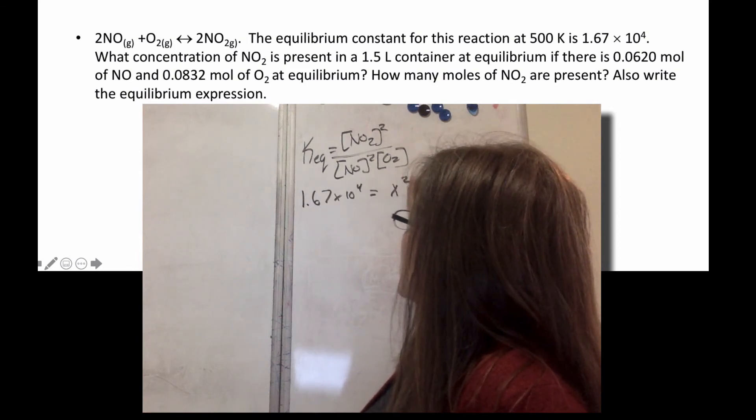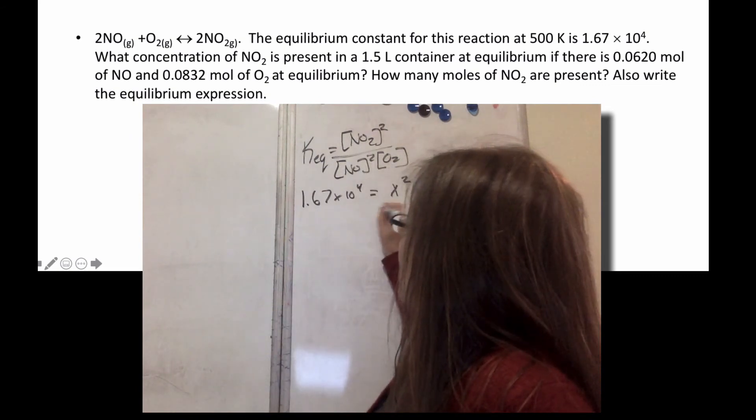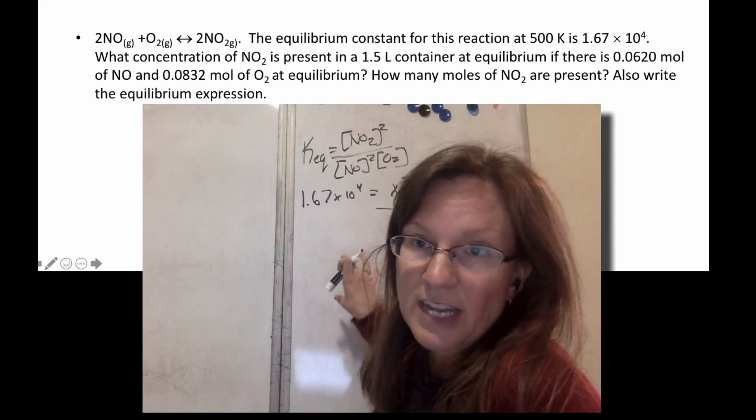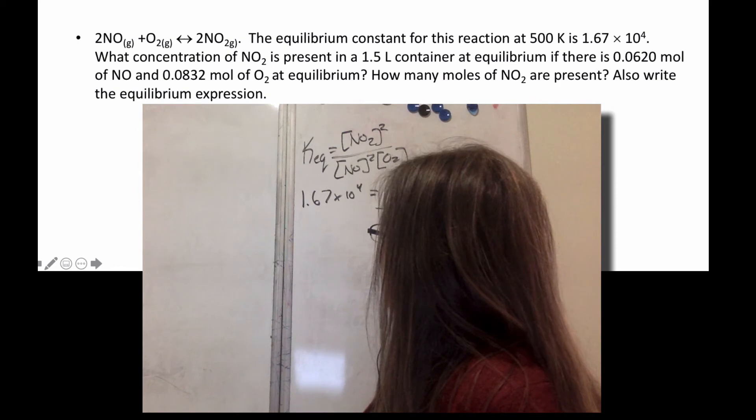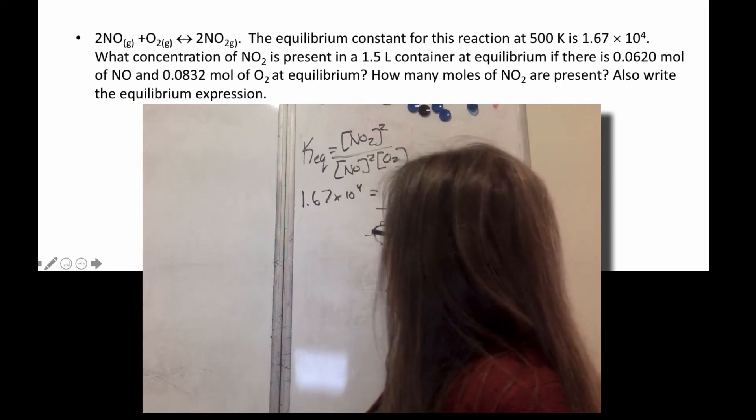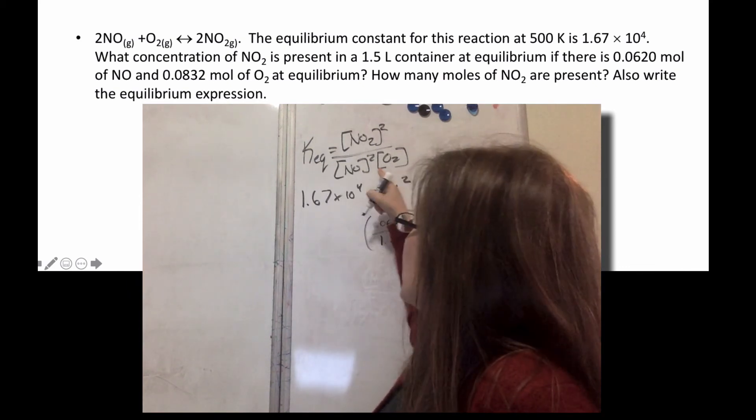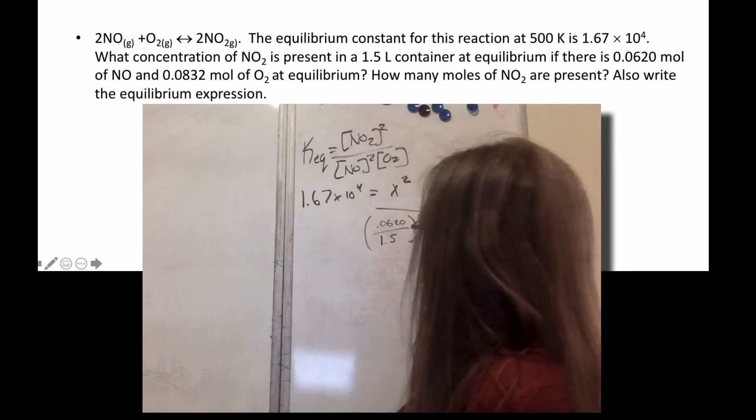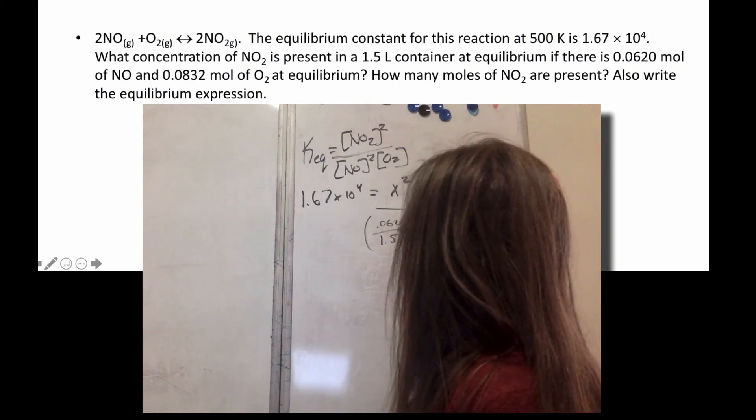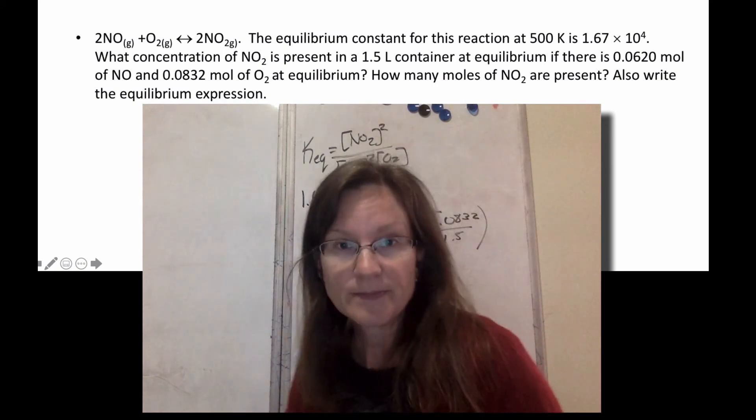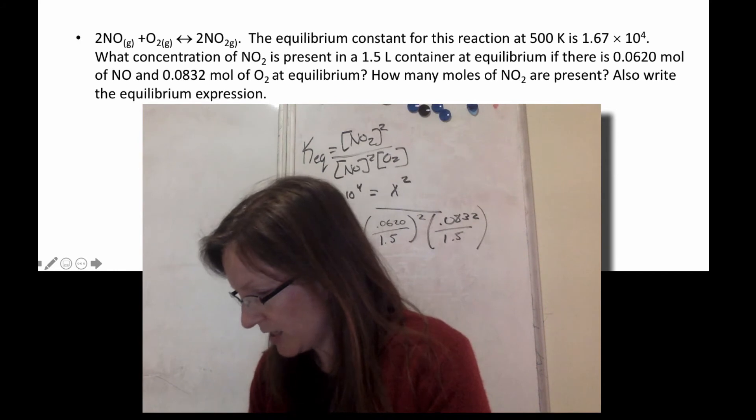Now I can start plugging in. The K value I give you is 1.67 times 10 to the fourth. What I don't know is that NO2—that's my thing I'm solving for. That's the question: what's the concentration of NO2? And then for the bottom part, I need concentration. Don't forget concentration is moles per liter. So I get that 0.0620 moles, but that's in 1.5 liters to make a concentration, and that's NO, so I have to square it. And then O2 is 0.0832, and again that's in 1.5 liters, and there's no power on that. So that's the math I would have to solve for this in order to get the concentration of NO2.